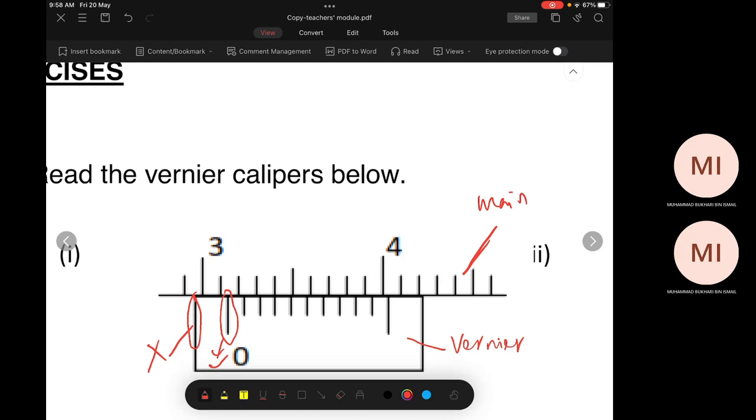Look at zero. What is the reading on main scale shown by zero? This one. This is 3.1, right? 3.1.